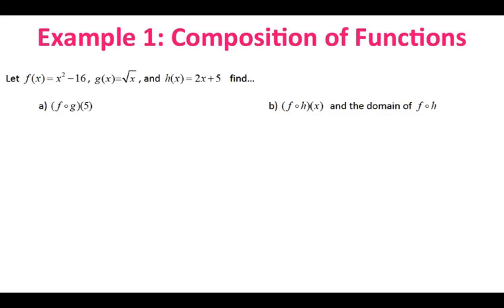So you have three functions here. You have f of x being x squared minus 16, g of x is the square root of x, and h of x is 2x plus 5. For the first problem, letter A, we are trying to find f of g of 5.